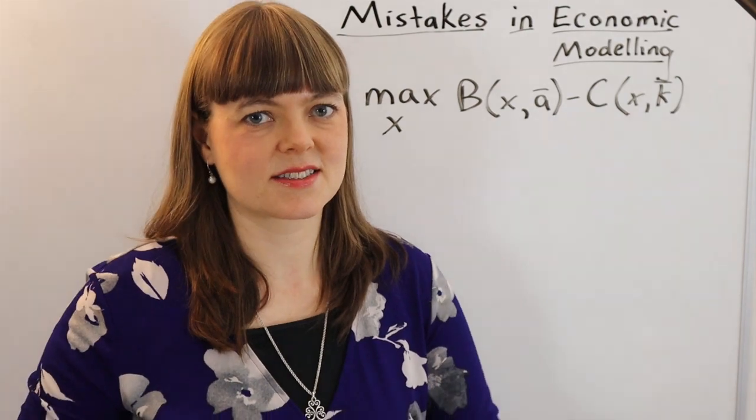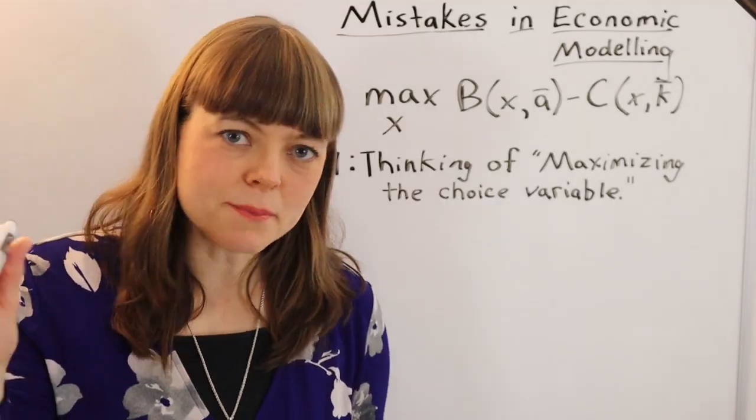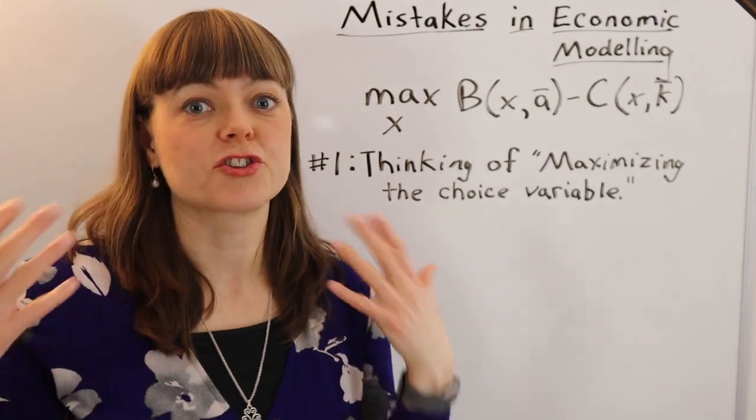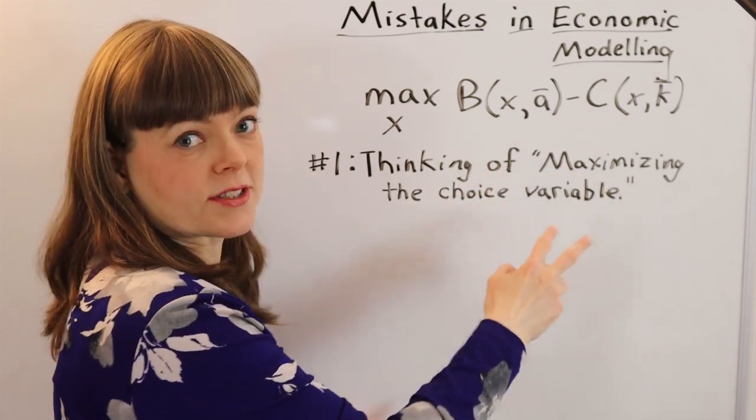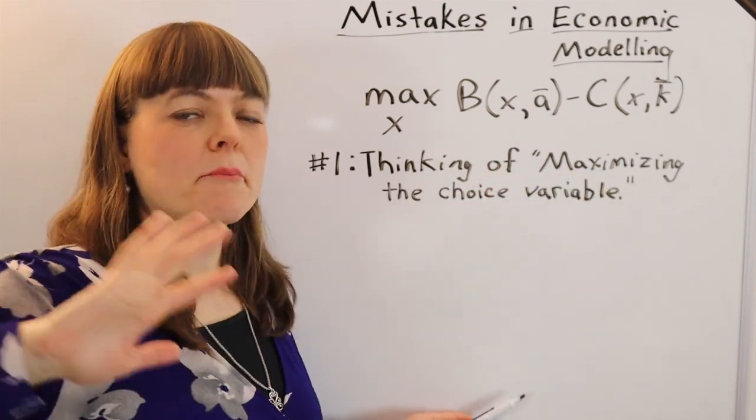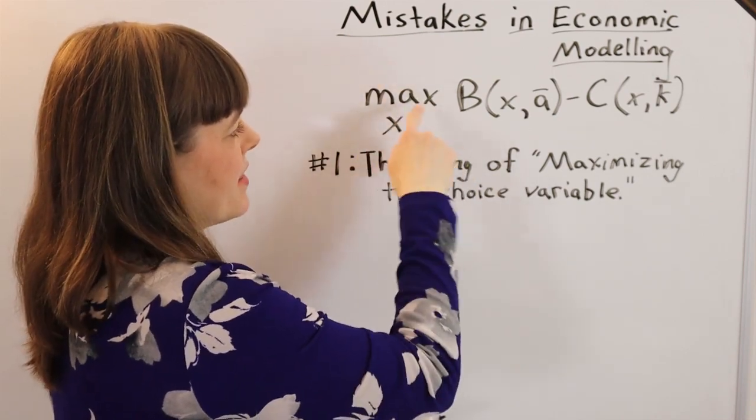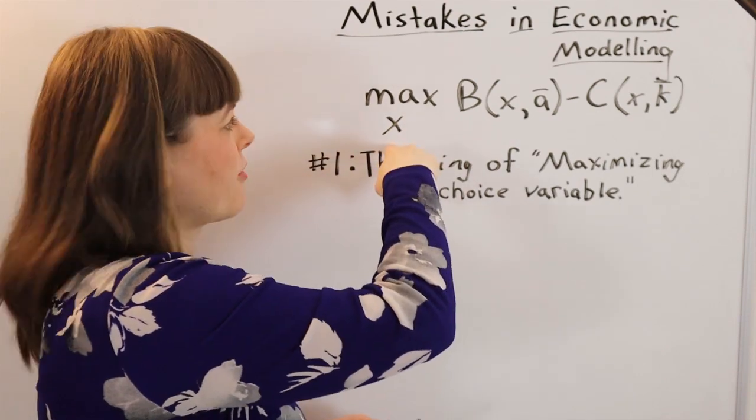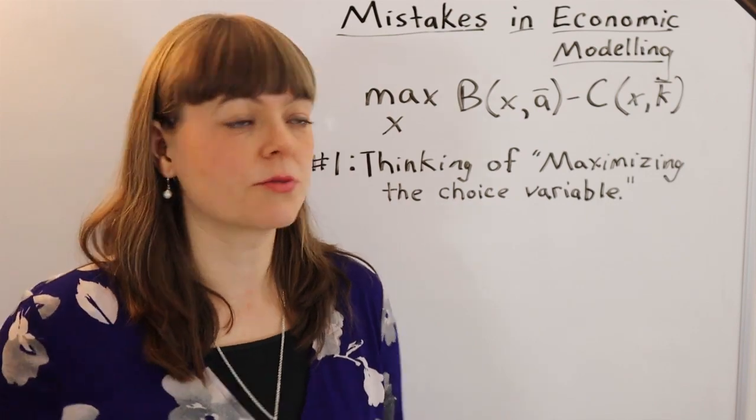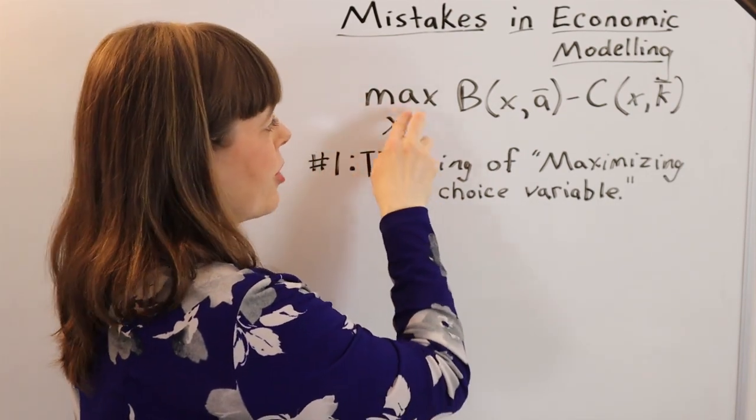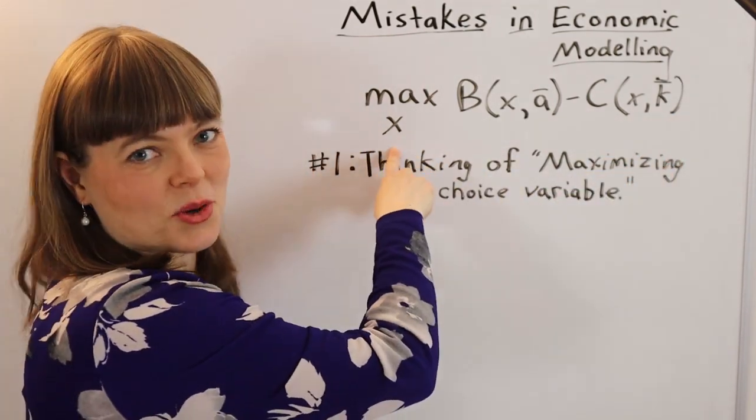The absolute most common mistake that students make when they're learning microeconomic theory is to think that they are maximizing their choice variable. And this is a completely understandable mistake because you look at this and the fact that the maximization sign is clustered with the choice variable makes you think you're maximizing your choice variable. That's absolutely wrong. You're not maximizing the choice variable. You're maximizing the objective function by choosing the choice variable.